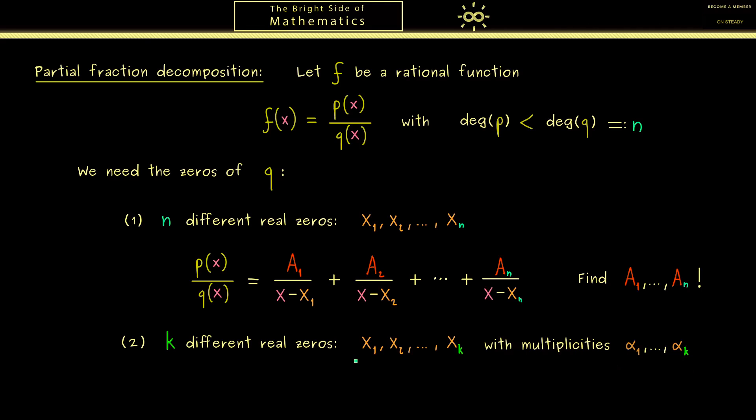So for example the zero x₁ has the multiplicity α₁. And of course the multiplicities should be natural numbers between 1 and n.